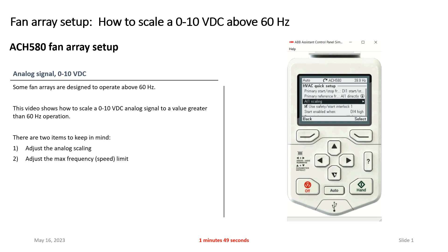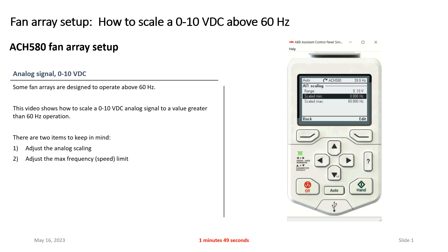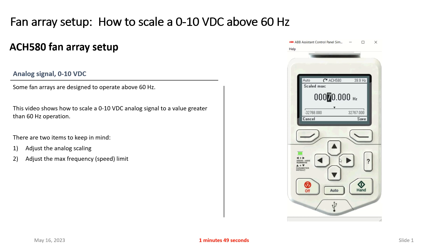So what I really want to take a look at now is my analog input 1 scaling. I'm going to go in and look at my scaling. Factory default: 0 to 10 volts equals 0 to 60 hertz. So I'm happy about my 0 to 10, but I need to change this to be 0 to 72 hertz. So what I'm going to do is come up here, hit edit, fly over here, and bump this up to 72 hertz.